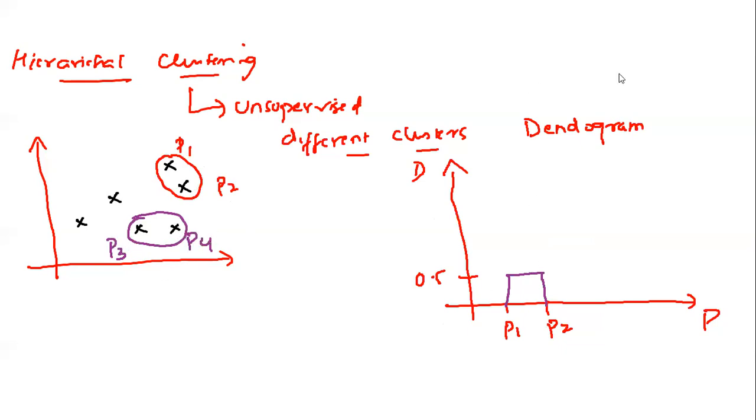So what I'm going to do is that I'm going to define another point, P3 and P4. And suppose this distance is somewhere around 1. So I'm going to combine this, and this distance will be 1. Now currently I've got two groups.